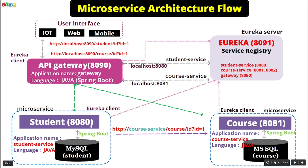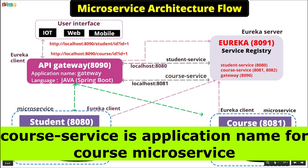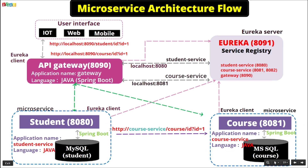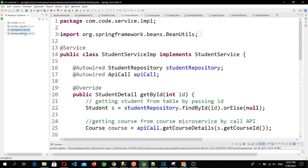To resolve this issue, we call one microservice from another using the application name. So we are calling the course microservice from the student microservice using the application name 'course-service'. How does this application name get resolved to an IP and port? Whenever we deploy our microservices they register to the Eureka Server, so the address gets resolved through Eureka — the same way the API Gateway does it. We don't have to worry about which server or port the course microservice is running on; Eureka takes care of it all.